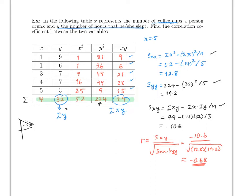The correlation is negative, which is not surprising since x increases while y decreases. The calculator can compute all of this too, but you still need to know how to find S_xx, S_yy, and S_xy by hand, as those may be asked separately on the test.